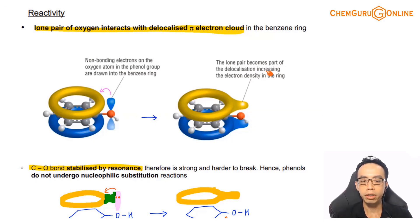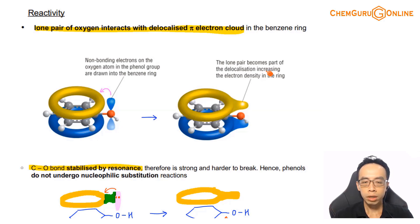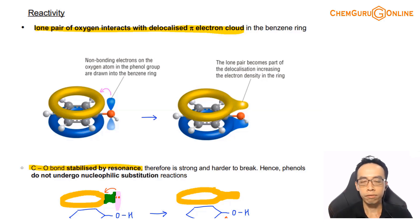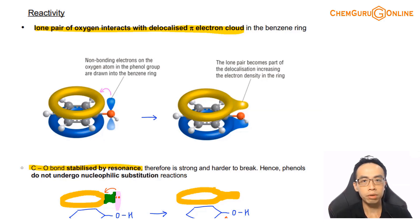We have benzene attached to an OH group. The first thing to discuss is how the presence of benzene affects the reactivity of the alcohol functional group. Recalling from our discussion of alcohols, there are two bonds we can break: the carbon-oxygen bond, and the OH bond, each targeted by different types of reactions.